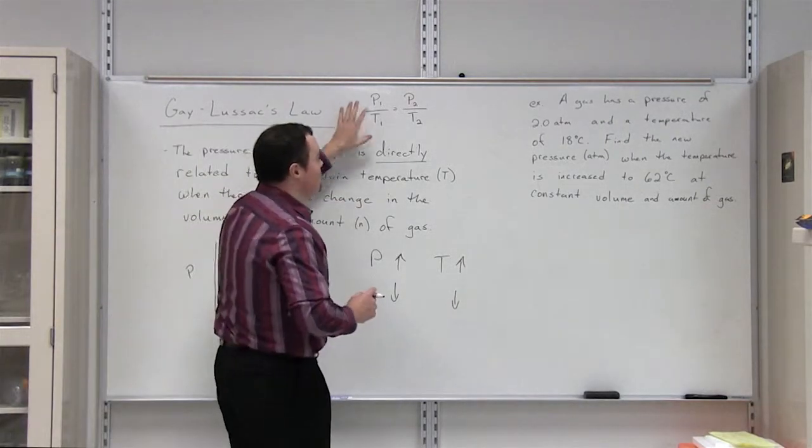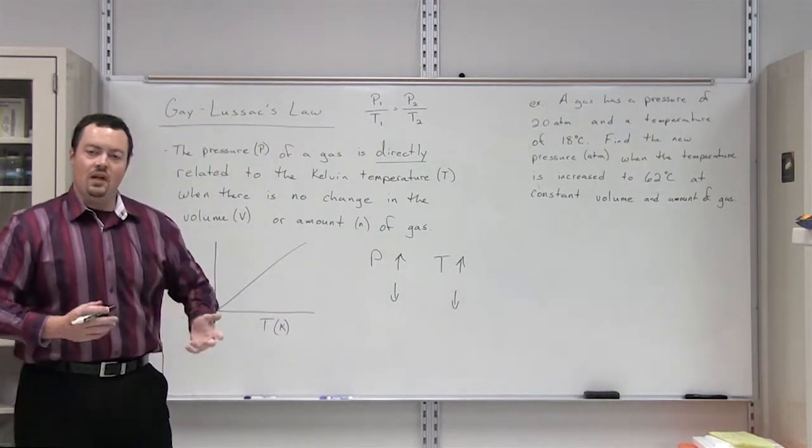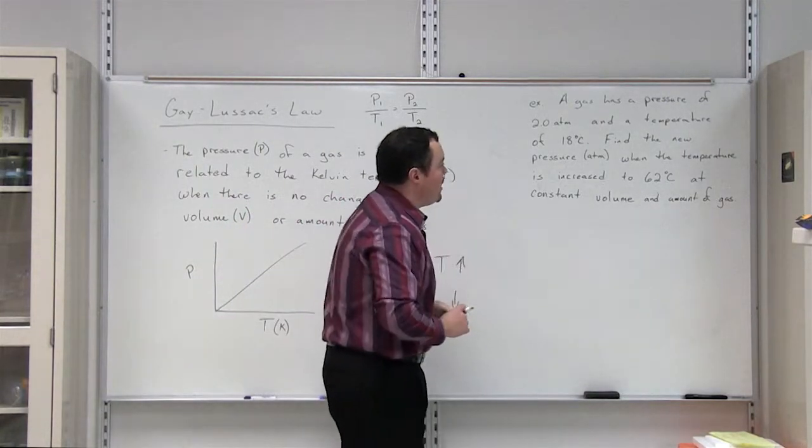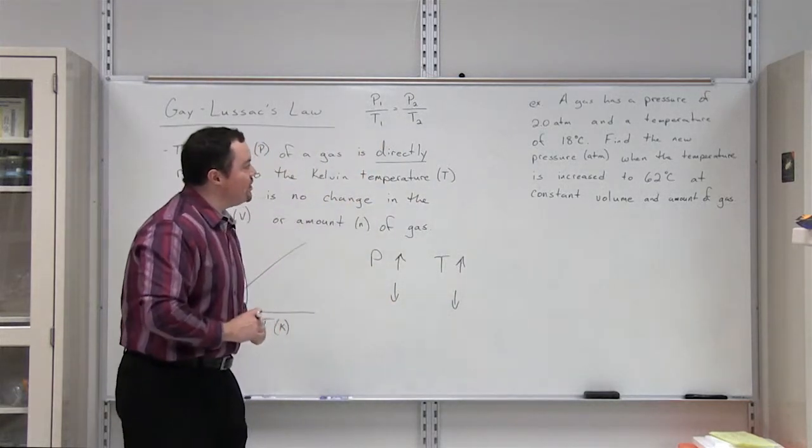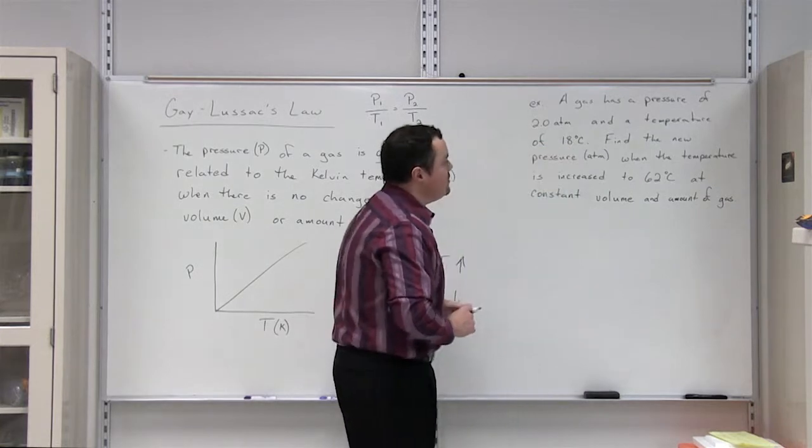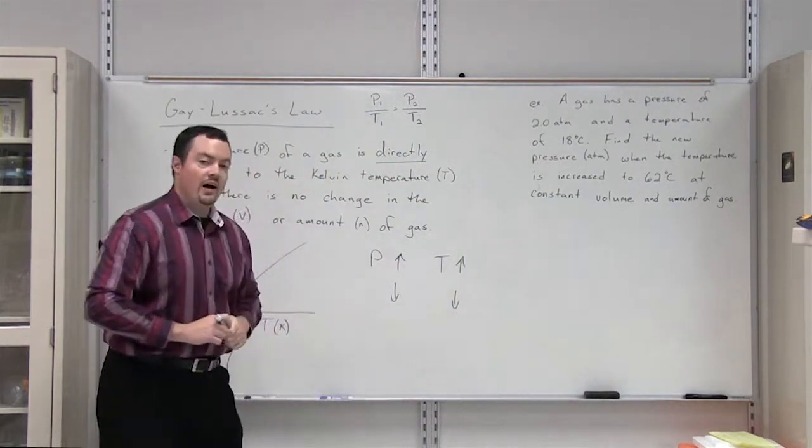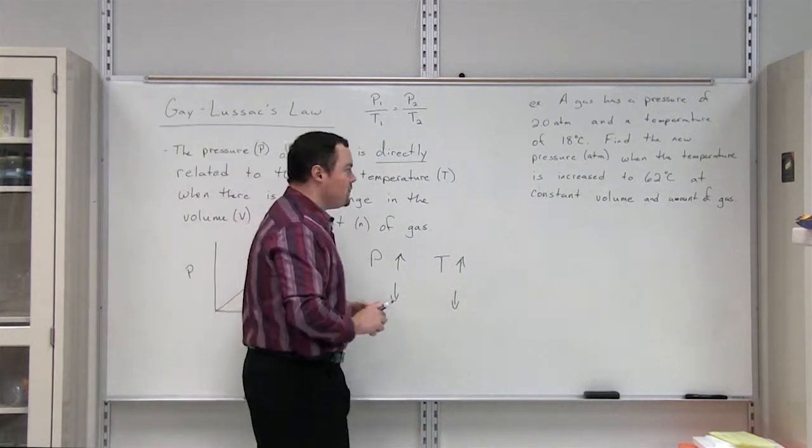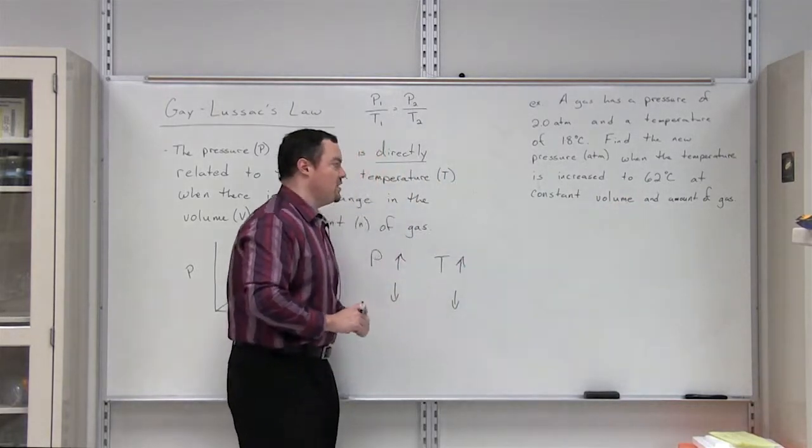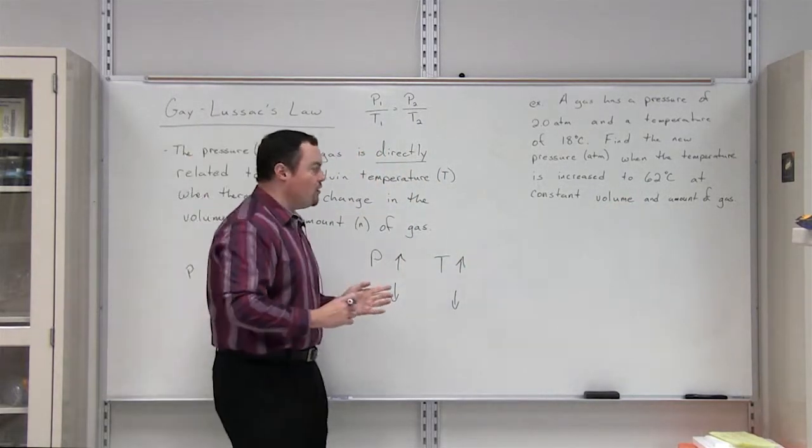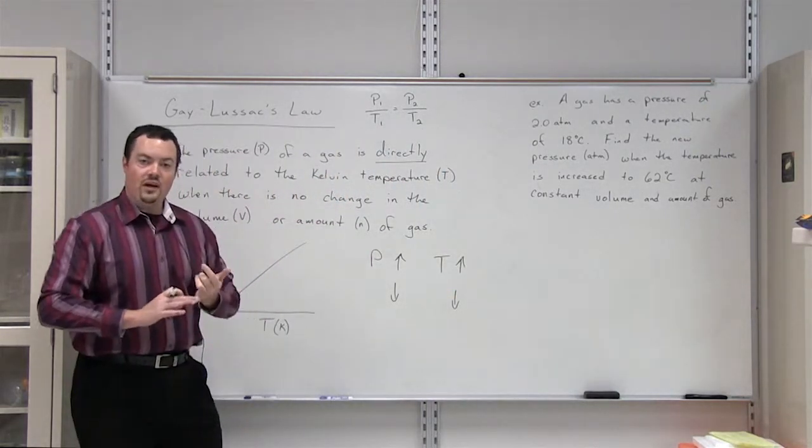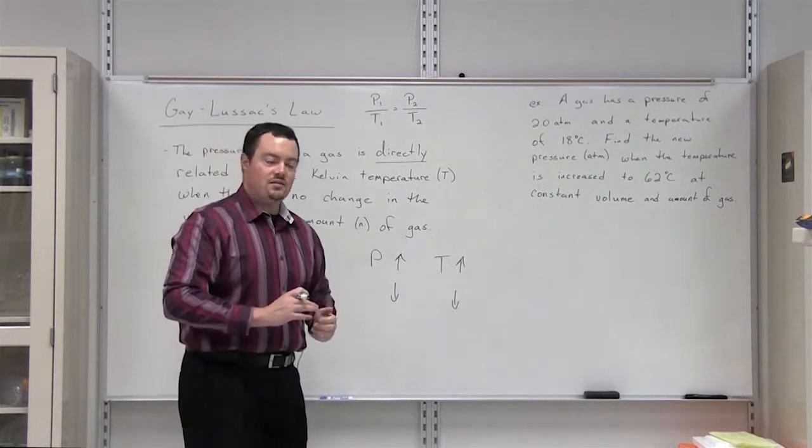How can we use this formula in a problem? Look at this problem right here. We have a gas that has a pressure of two atmospheres and a temperature of 18 degrees Celsius. We want to find the new pressure when the temperature is increased to 62 degrees Celsius. And we're going to keep the volume and the amount of gas constant. So we have to look at what variables are given to us in the problem.